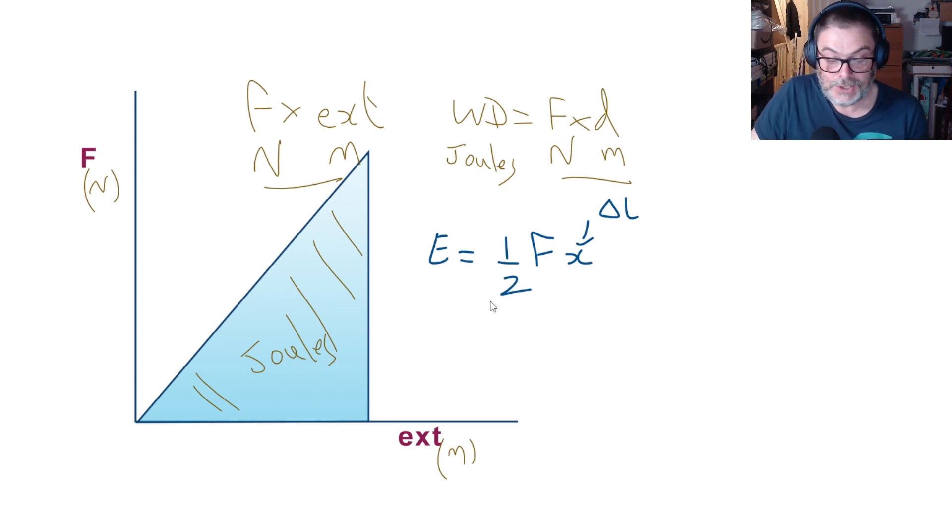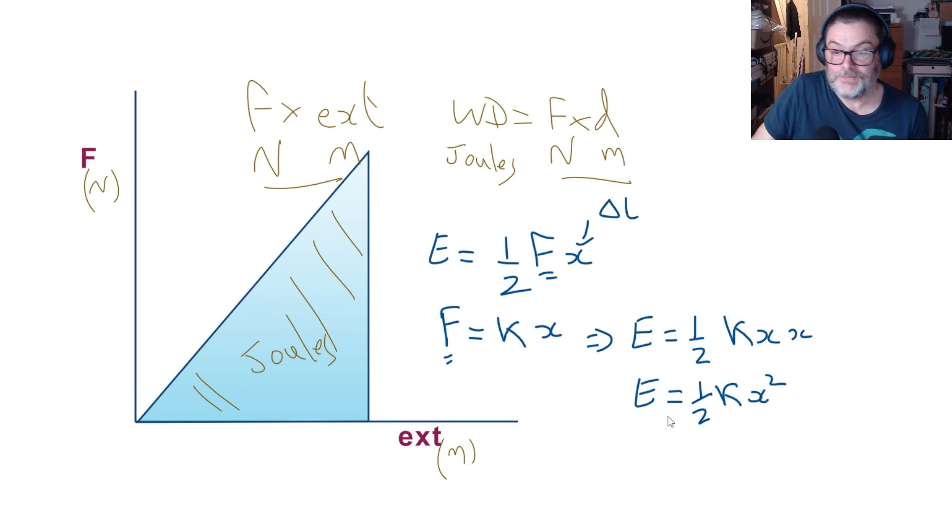We can also take this a step further and consider that the force applied to the wire is equal to K times the extension, and so we can now substitute for this force. That will lead us to another formula for the energy which is going to be a half K times X times X, which is a half K X squared.